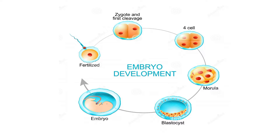Embryo development. Firstly, when the morphologically normal and motile sperm get fertilized with the oocyte, then the zygote or the first cleavage is formed, then the four-cell stage, then the morula, then blastocyst, and then the embryo develops.